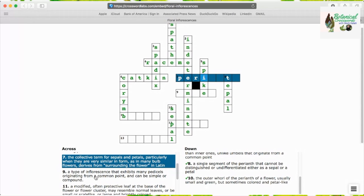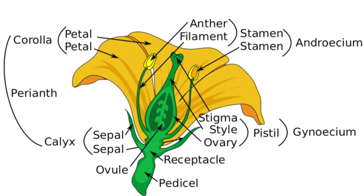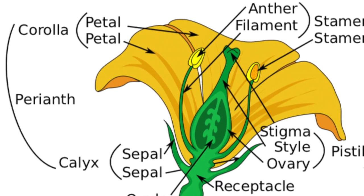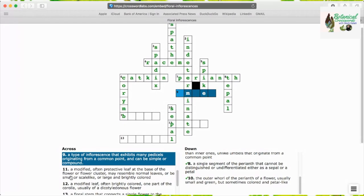Perianth is the next answer, the collective term for sepals and petals, particularly when they are very similar in form. It derives from surrounding the flower in Latin.